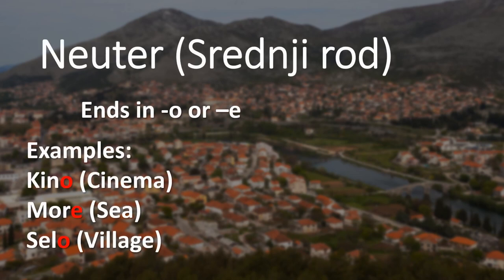Neuter, or srednji rod, ends in either O or E. Examples include kino meaning cinema, more meaning sea, and selo meaning village.